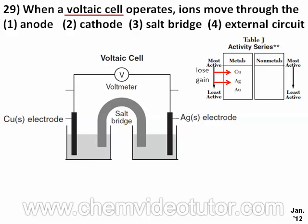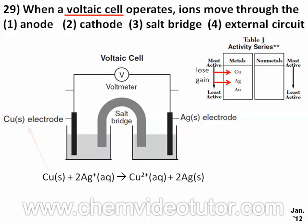We can write the reaction for this as follows: Cu in the solid phase plus two Ag⁺ ions that are aqueous will produce an aqueous Cu²⁺ ion plus two Ag solid. The Cu solid refers to this electrode where electrons will be lost. The Ag⁺ ions will fill this container, the Cu²⁺ ions will fill this container, and the Ag solid refers to this electrode where electrons will be gained.